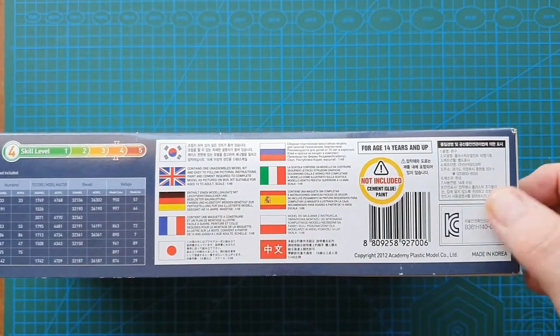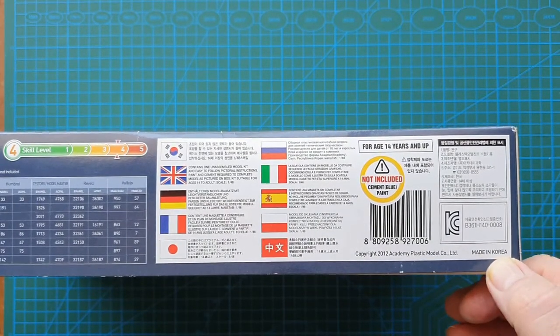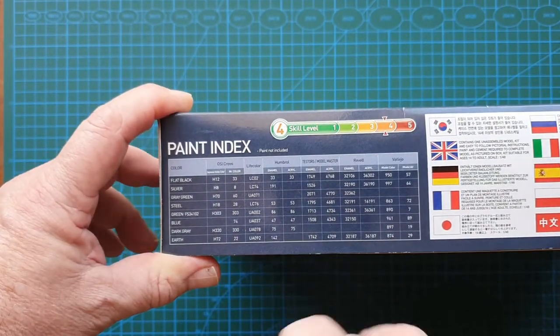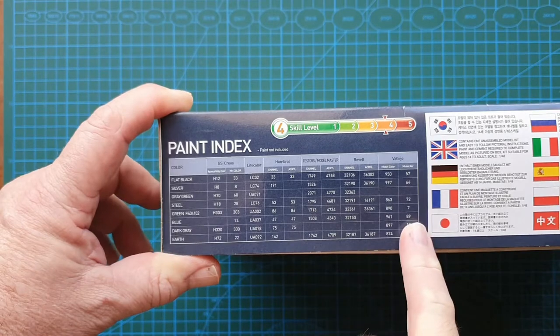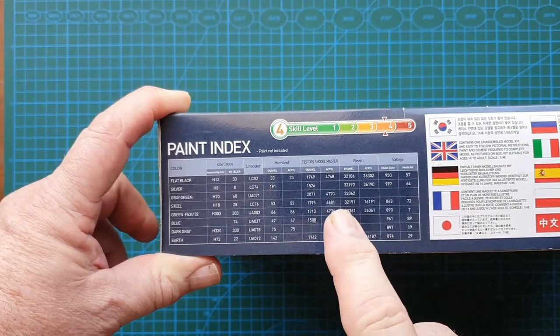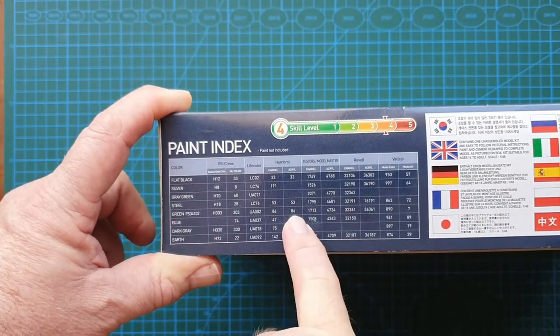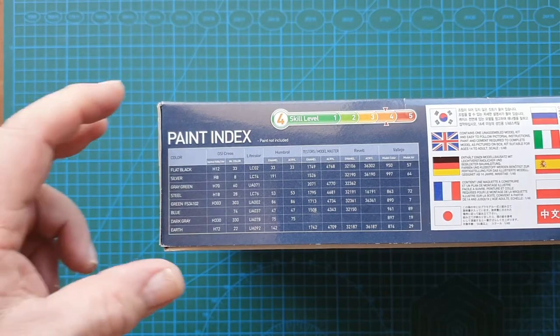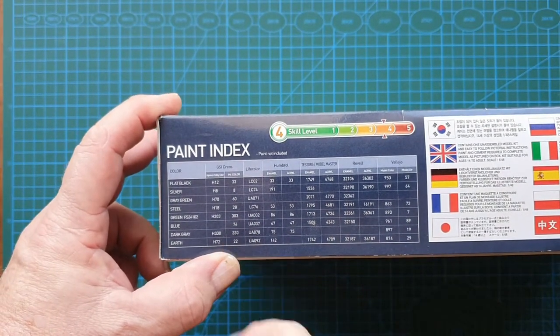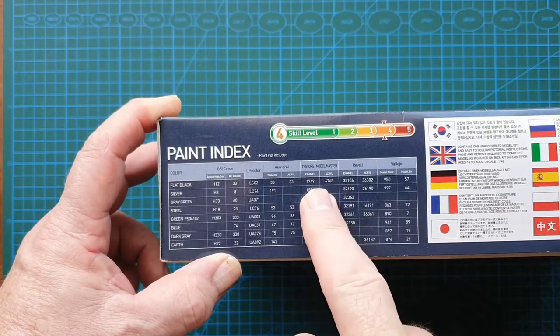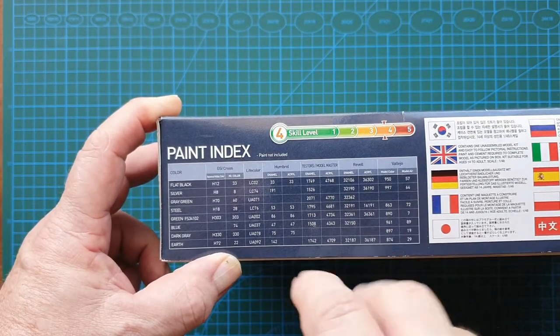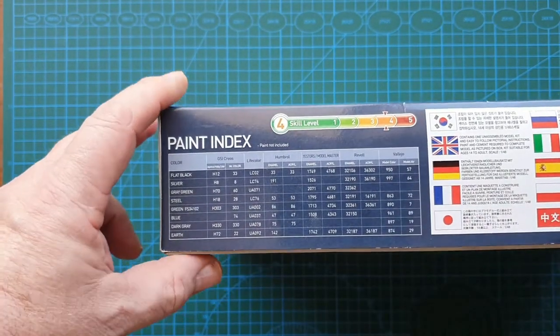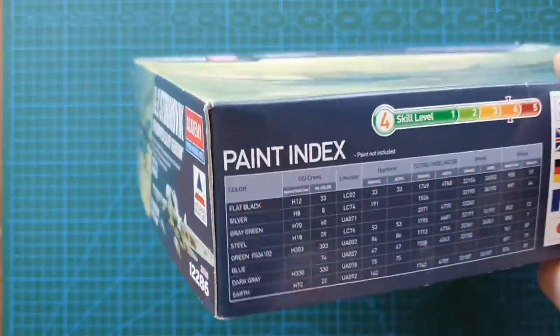On the side you've got the paints—that's very handy. Life Color, Humbrol, Testors, Revell, Vallejo, GSI Creos—so that's brilliant. I wish they'd all do that.